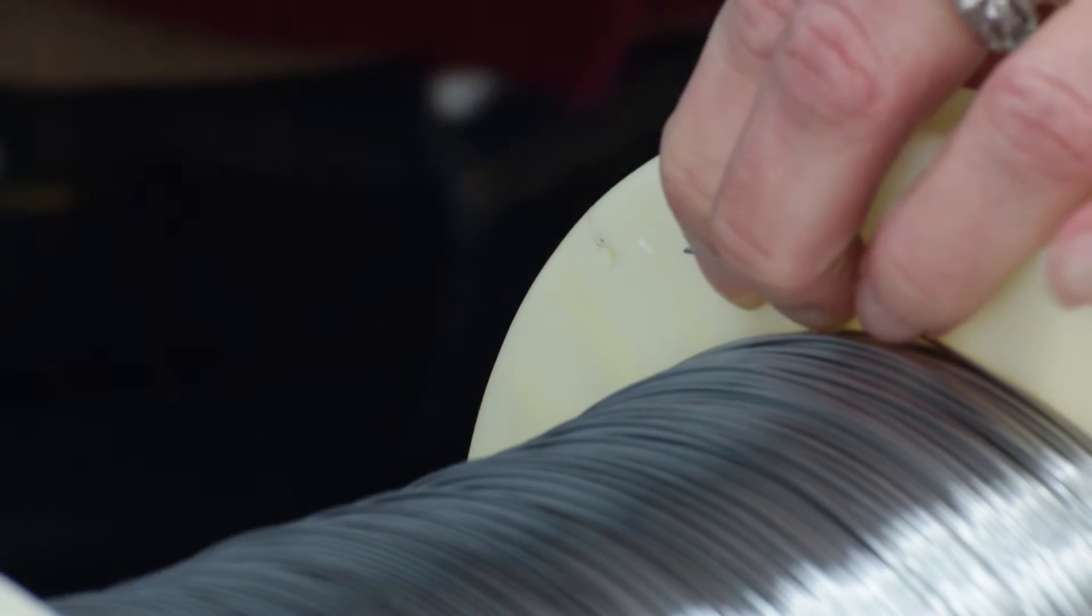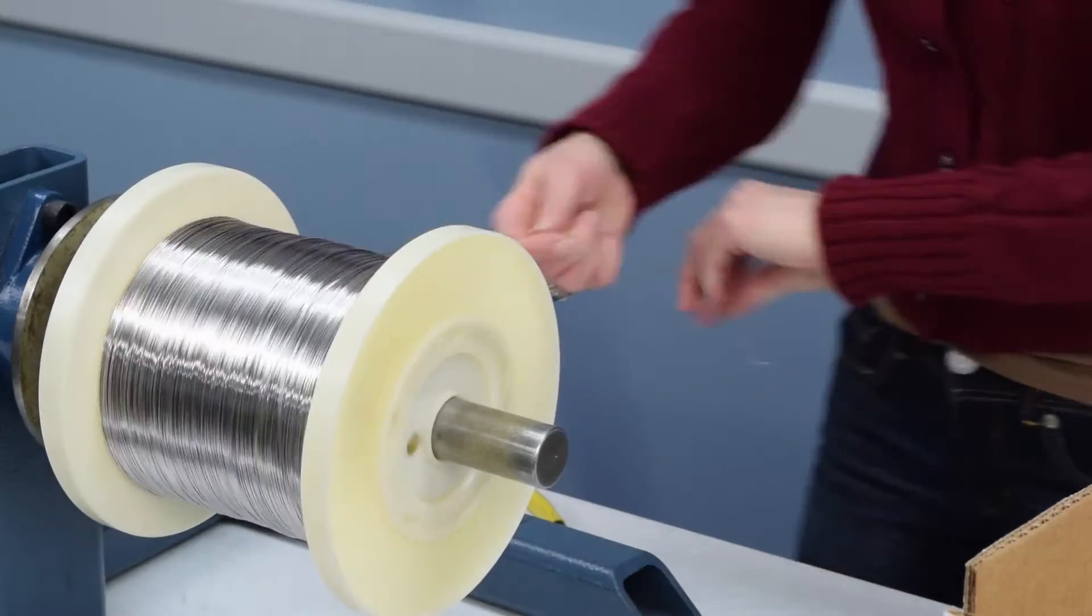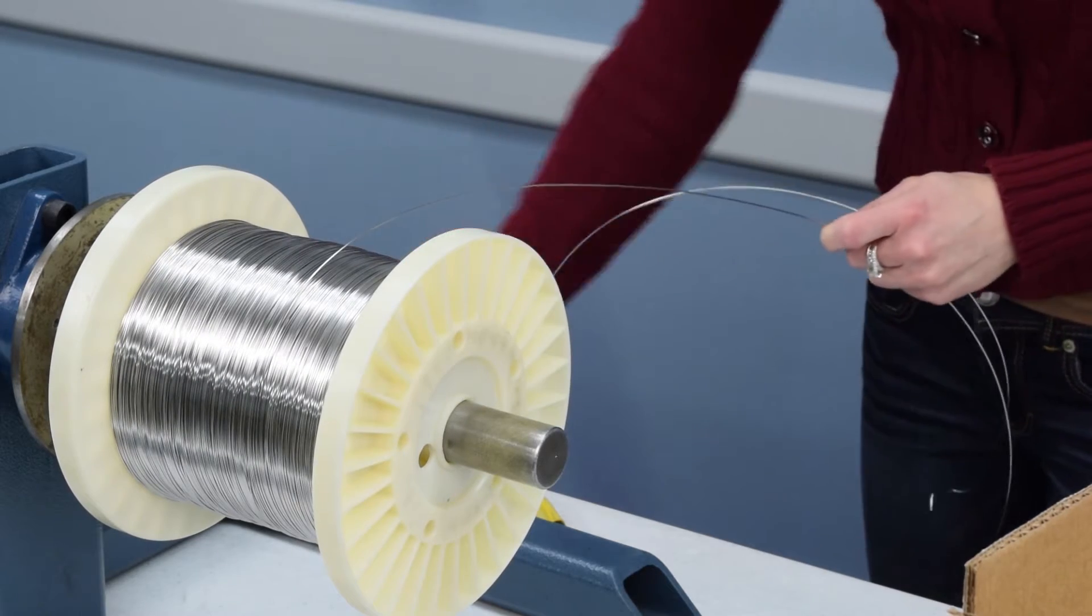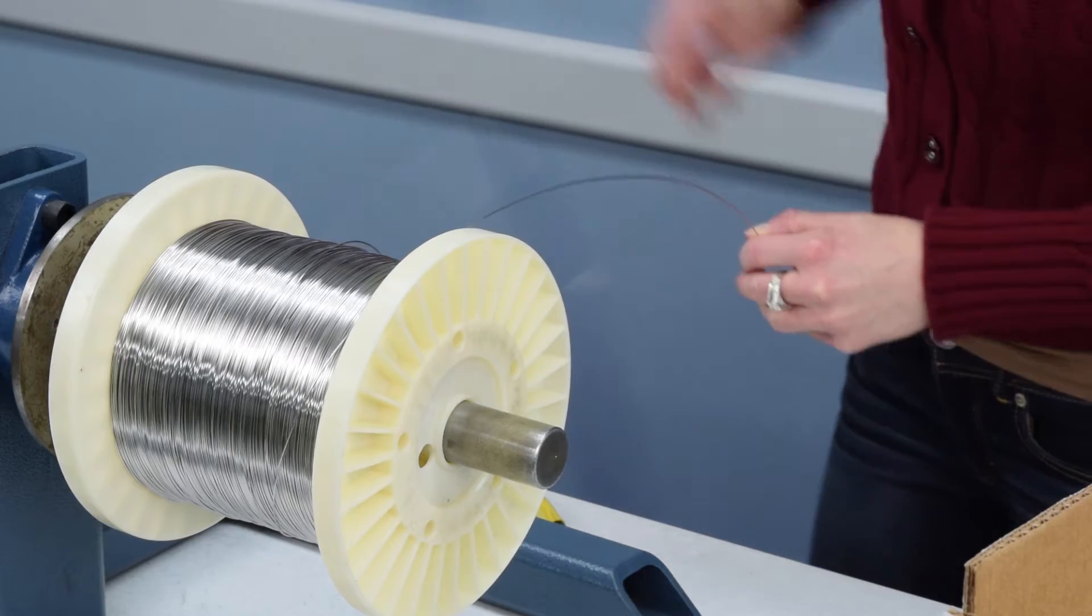When removing the wire from the spool for your sample, make sure you keep tension on the wire. To ensure a sample that hasn't been influenced by prior inspections, we recommend you scrap off 5 feet of wire.